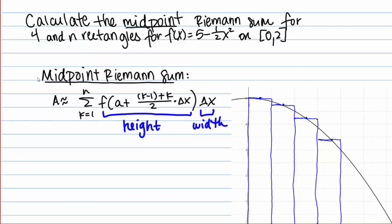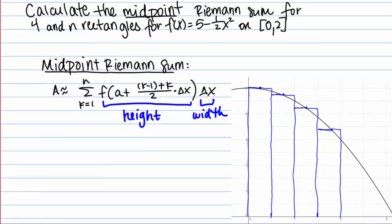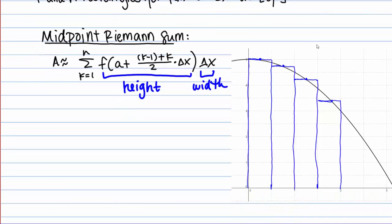Riemann sums are just a way to approximate the area under a curve by dividing it into rectangles and then summing up the area of those rectangles. The midpoint Riemann sum, as you can see in this picture here, means that I'm using the midpoint of each rectangle to determine the height — the height is determined based on the function value. I've written down the formula for the midpoint Riemann sum.